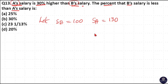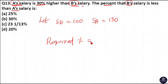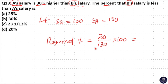Now we need to find how much percentage B's salary is less than A's salary. The difference between A's and B's salary is 130 minus 100, which is 30 rupees. So B's salary is 30 rupees less than A's salary. The required percentage will be equal to 30 divided by 130, multiplied by 100.